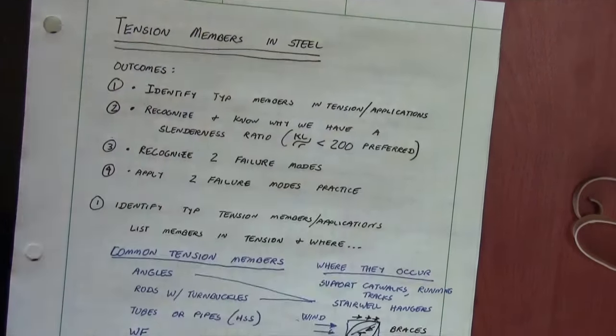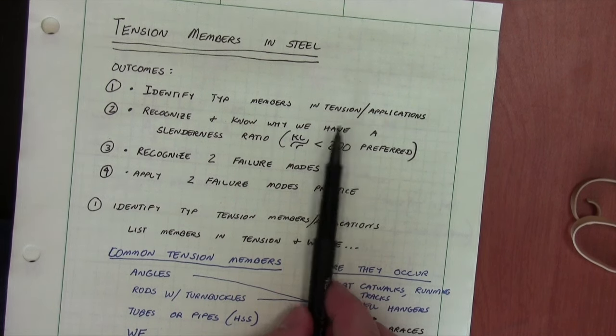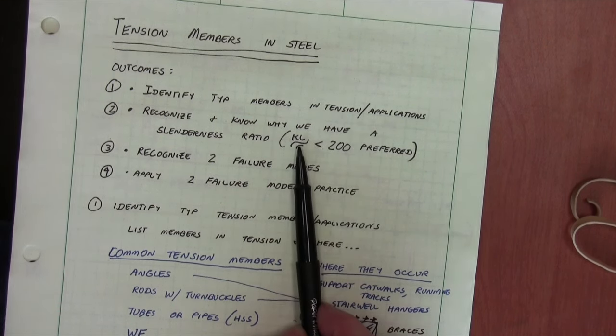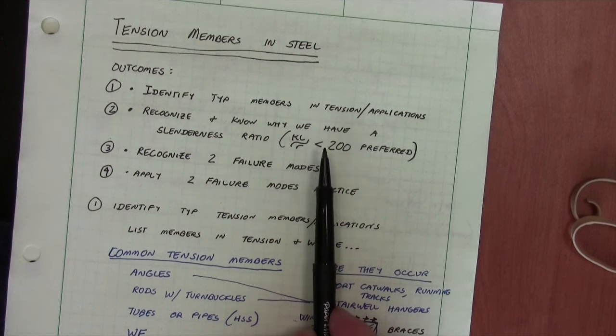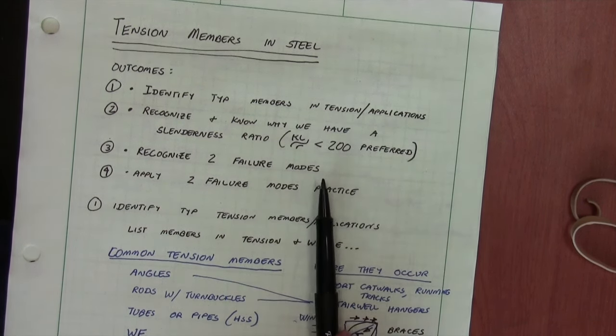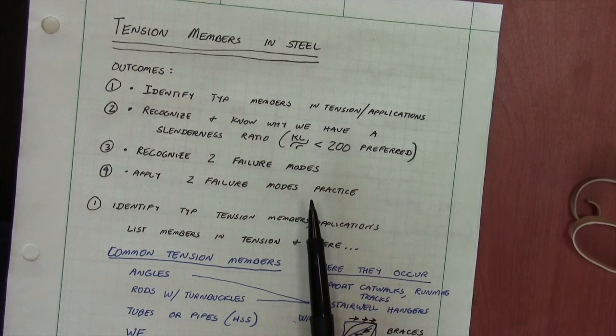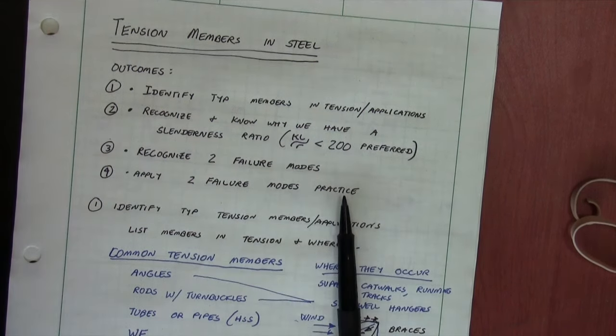So looking back at our steel tension members and outcomes that we had, first we wanted to identify the tension members in steel. We then looked at the slenderness ratio of KL over R and why we have that and how that can be achieved. And then we talked about a couple of different failure modes, sketching those. And then finally, we calculated those values in practice. And this has been our introduction to steel members in tension. Thank you very much.